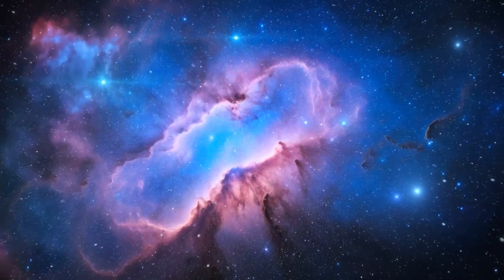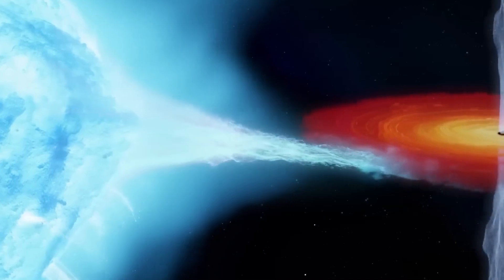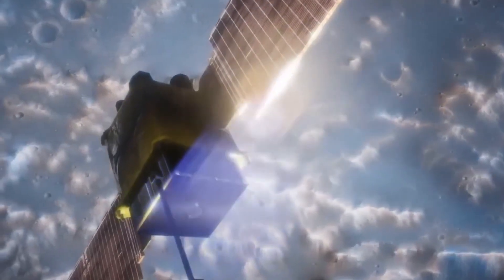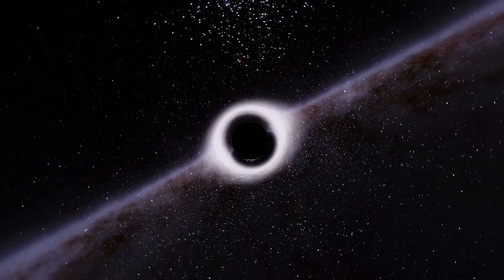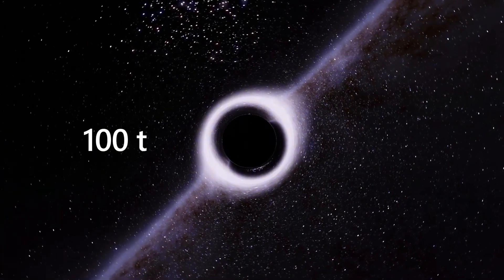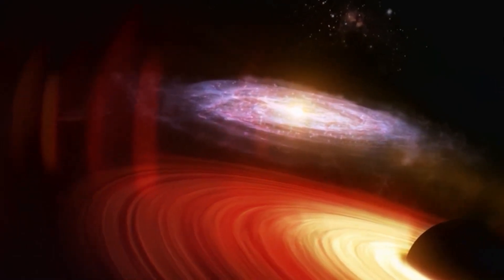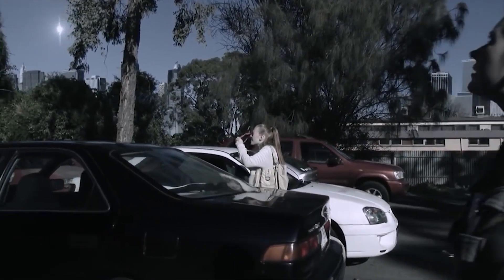In recent years, gravitational lensing has been used to study some of the most enigmatic objects in the universe: black holes. These cosmic entities are regions of space where gravity is so strong that not even light can escape. While black holes themselves are invisible, their presence can be inferred through the lensing effect they produce on the light from nearby stars and galaxies. By analyzing these distortions, astronomers can learn about the mass, size, and other properties of black holes, providing valuable insights into the nature of these mysterious objects.